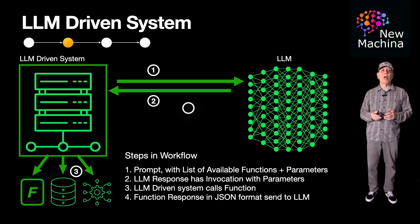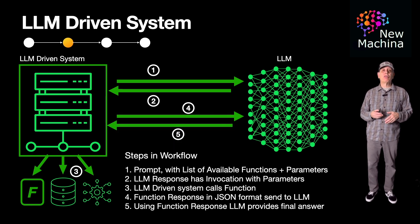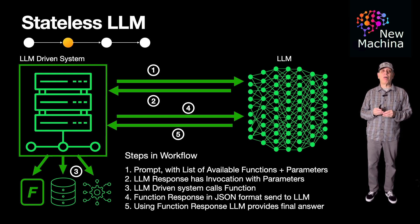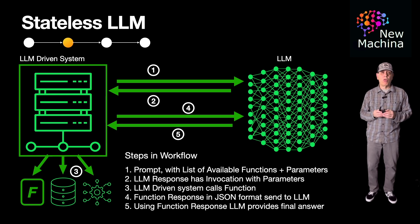In step three, the LLM-driven system will then invoke the function using the parameters the LLM sent back. In step four, the LLM-driven system will take the results from the function and call the LLM again, passing the function results. In step five, the LLM will use the function results to generate a final response and send it back to the LLM-driven system. It's really important to note that the LLM itself is not calling the function — the LLM determines that calling a function is required, and so it returns the invocation details back to the LLM-driven system, which then calls the function or external tool.